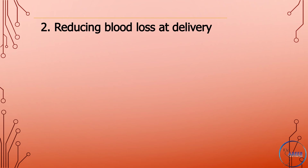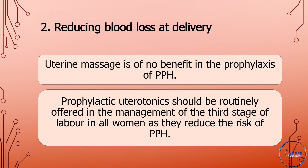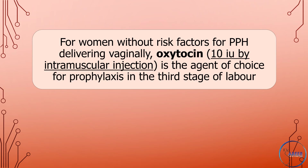Reducing blood loss at delivery: uterine massage is of no benefit in the prophylaxis of postpartum hemorrhage. Prophylactic uterotonics should be routinely offered in the management of the third stage of labor in all women as they reduce the risk of postpartum hemorrhage. For women without risk factors for PPH delivering vaginally, oxytocin 10 international units by intramuscular injection is the agent of choice for prophylaxis in the third stage of labor.